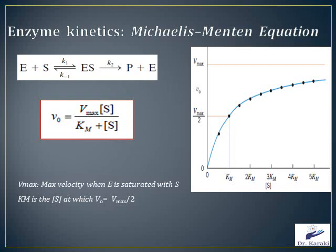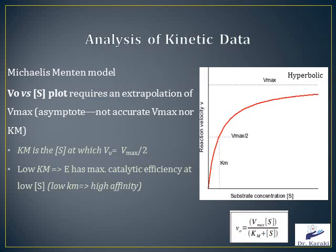The Michaelis-Menten model, obtained after two assumptions — the assumption of equilibrium and steady state — is: V₀ = Vmax × [S] / (Km + [S]). Vmax is known as the maximum velocity, obtained when all active sites of the enzymes are saturated with the substrate, whereas Km reflects the affinity of the enzyme for the substrate.